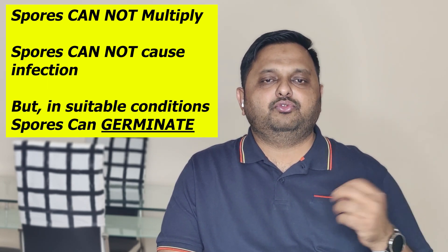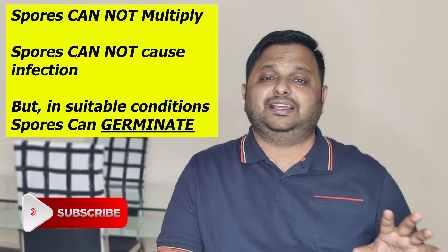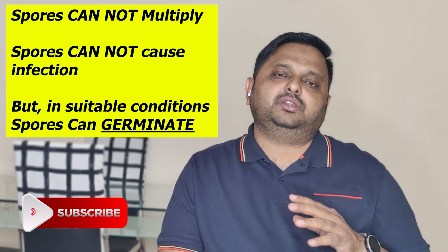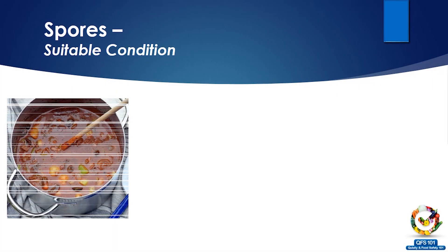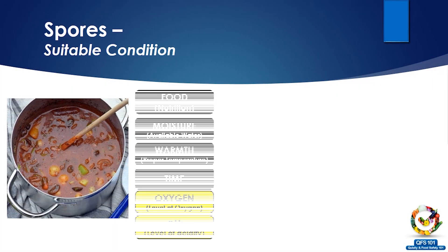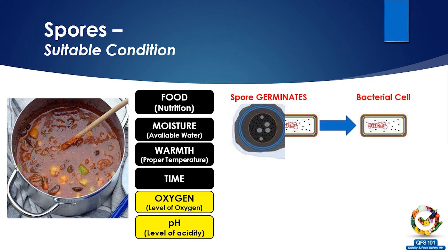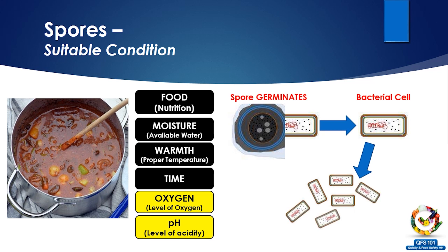If I eat a food item containing hundreds of bacterial spores, nothing will happen because the suitable environment is not there inside the body. However, if after cooking we leave food outside for a long time — food is there, moisture is there, the temperature comes down into the danger zone — and time and everything else is also suitable, then the spore will germinate. After germination it gives rise to living vegetative bacteria, which will now start to multiply. The number one reason for food poisoning worldwide is leaving food at room temperature for a long time after cooking.